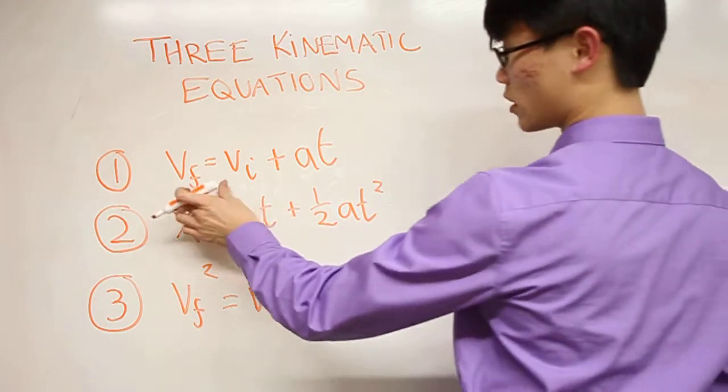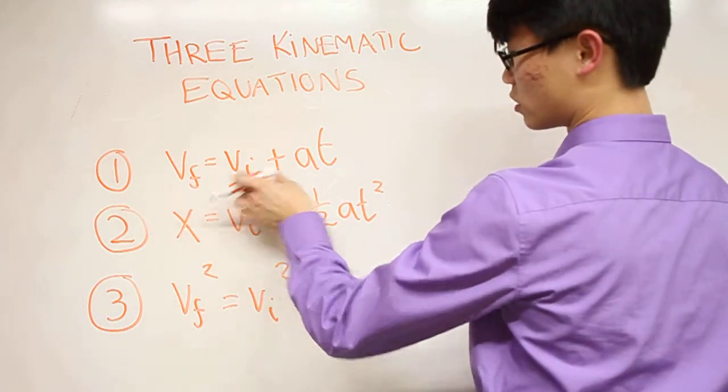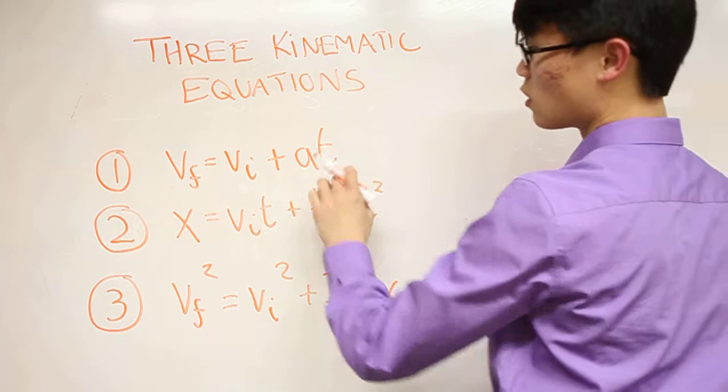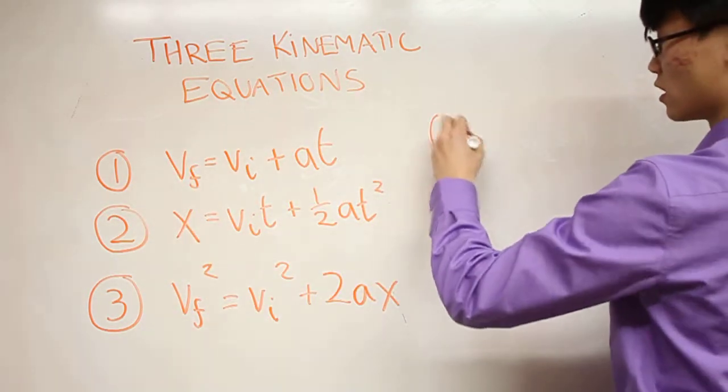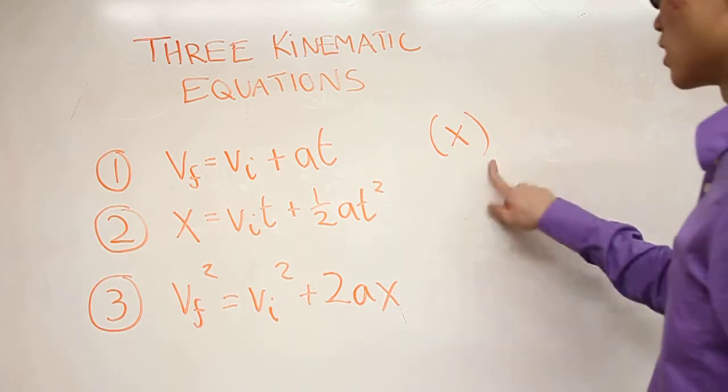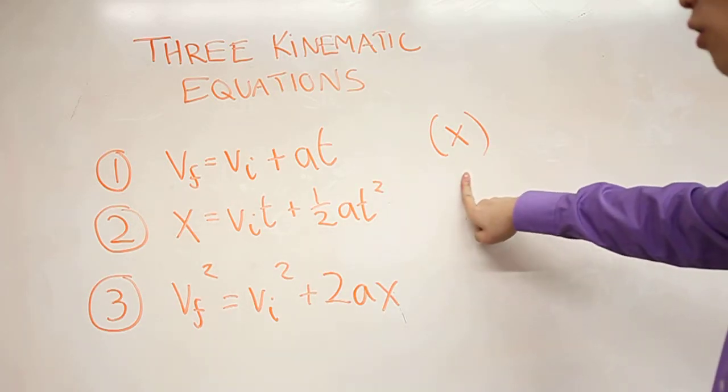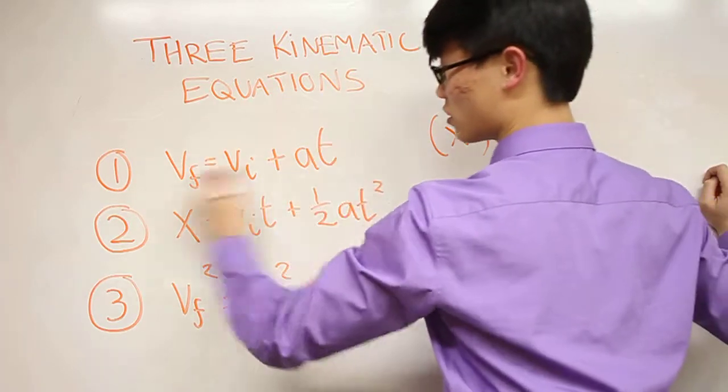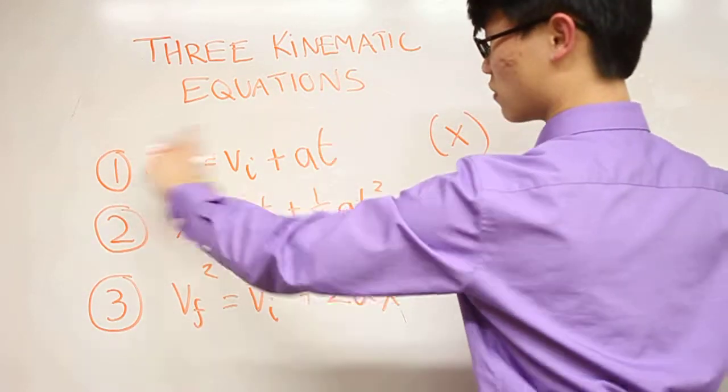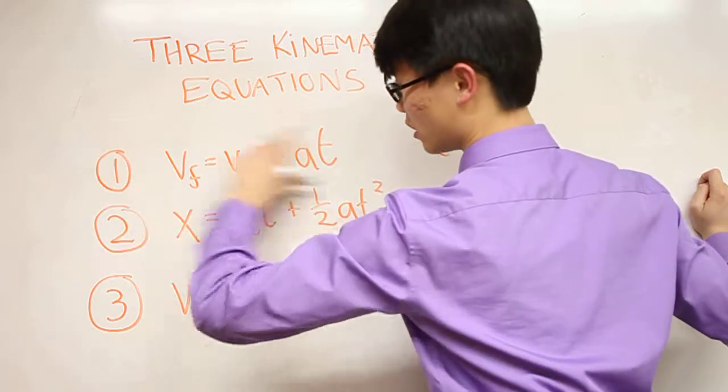Let's say in a problem, they give you v_i, they give you a, they give you t - or they give you 3 out of these 4. But what they don't give you at all is x. They don't care about distance. So if you're given 3 variables, or 2 if one is zero, and they don't tell you x, you should immediately use this equation. Think of this equation as the one that does not depend on x.